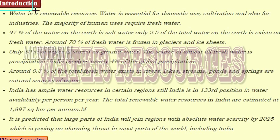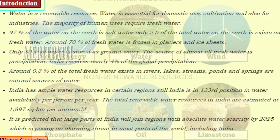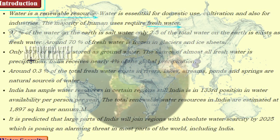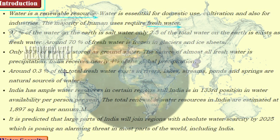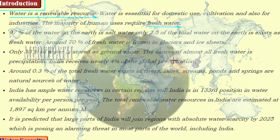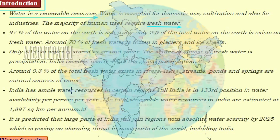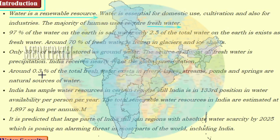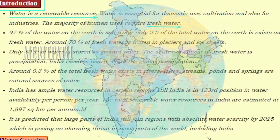Water resources — introduction to the chapter. We all know that water is a renewable resource, essential for domestic use, cultivation, and industries. The majority of human uses require fresh water. 97% of the water on Earth is salty, and only 2.5% exists as fresh water. Around 70% of fresh water is frozen in glaciers and ice sheets, and only 30% is stored as groundwater. The source of almost all fresh water is precipitation. India receives nearly 4% of global precipitation.